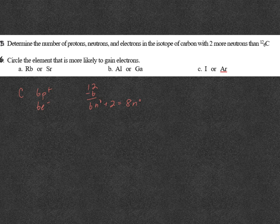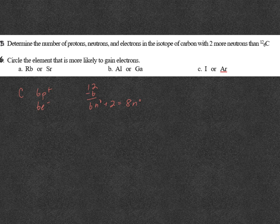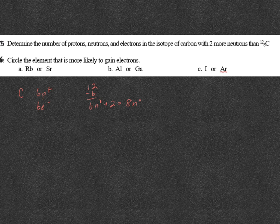Now, element that is more likely to gain electrons. So you have to look at electron configuration. So rubidium ends with S1. Strontium ends with S2. Strontium is not going to want to gain any more electrons. Because it would have to bump into the next energy level. So therefore, rubidium is going to be more likely to gain an electron.